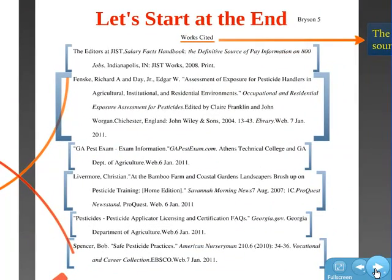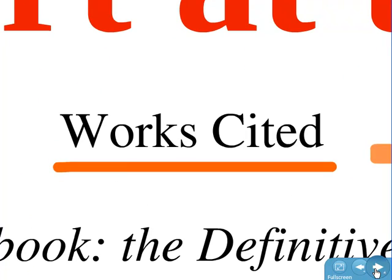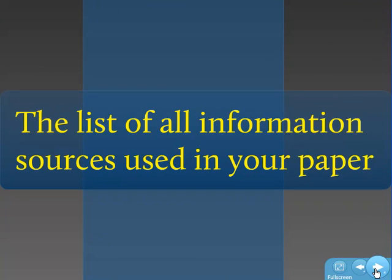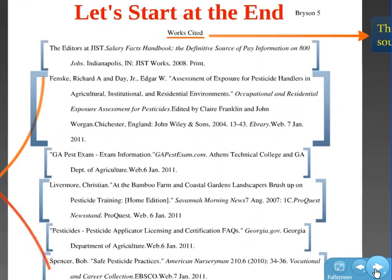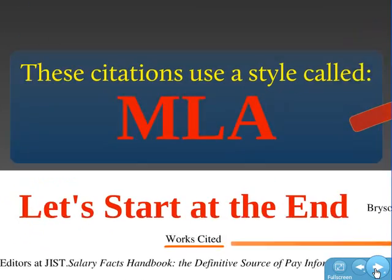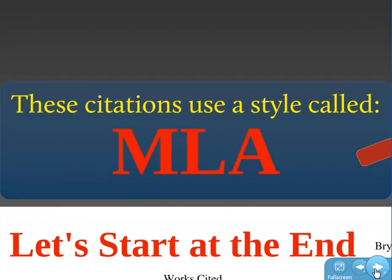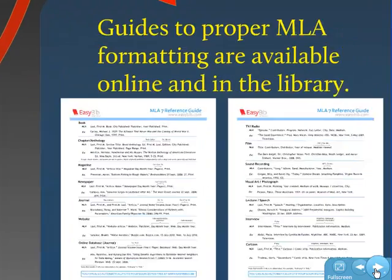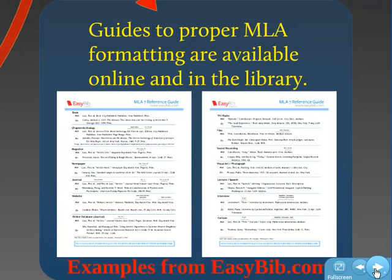Let's start at the end. What you're looking at is a works cited page. This page has the list of all the information sources that you used in your paper. These citations use a style called MLA. You can find information about using MLA citations online and in the library. These examples come from easybib.com, and you can also find them in the MLA user's guide in our library's libguides.